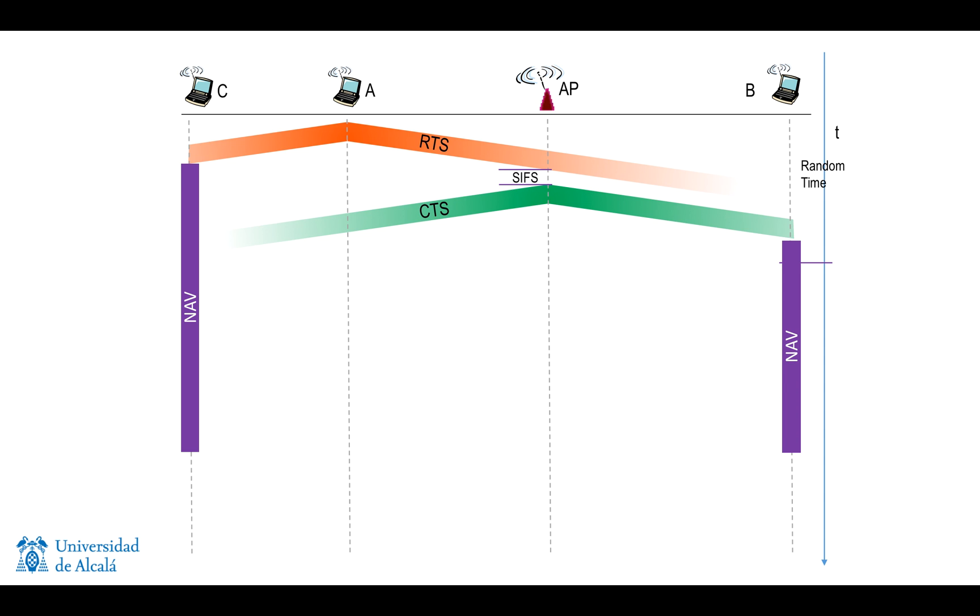You may be wondering how both C and B know for how long they have to maintain the NAV inhibition. Well, these times are included in the RTS and CTS control frames.